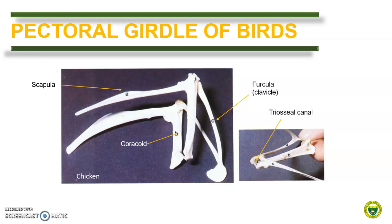Between the bones of the pectoral girdle is the triosseal canal, which is traversed by the tendons of the elevator of the wing — the supracoracoid muscle.